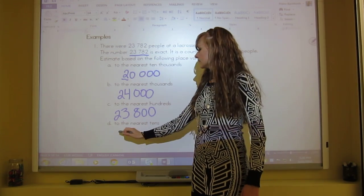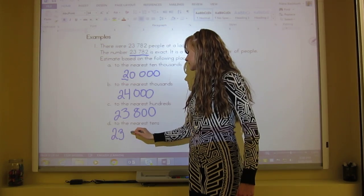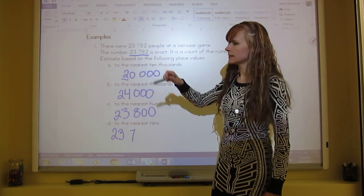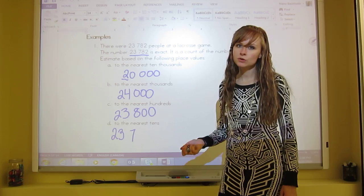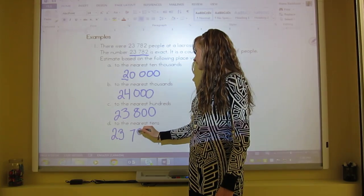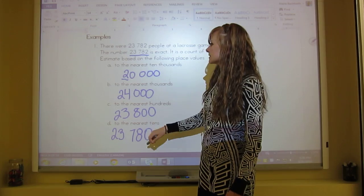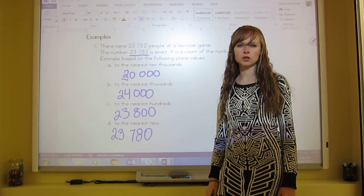And then to the nearest tens. So two, three, seven stay the same. And then eight, we look right next door. It's a two. So that's four or less. We let it rest. So rounding to the nearest tens, this number would be 23,780.